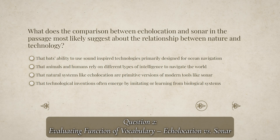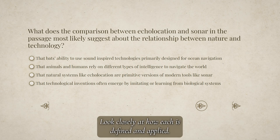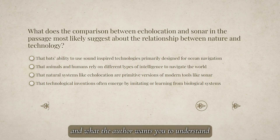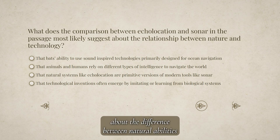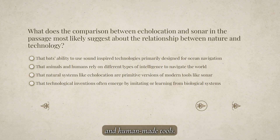Question two: Evaluating Function of Vocabulary — Echolocation versus Sonar. This question asks you to compare two key terms used in the passage. Look closely at how each is defined and applied. Think about their origin, purpose, and what the author wants you to understand about the difference between natural abilities and human-made tools.